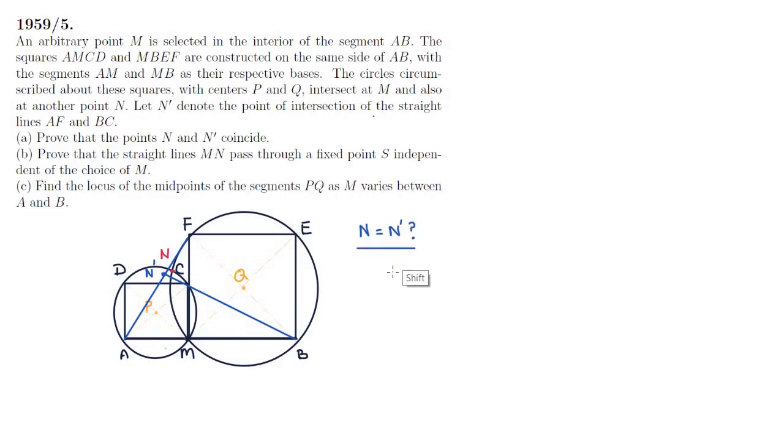Prove that points N and N' coincide. N is defined as lying on both circles, so N is defined as being on the circumference of both circles. If we can prove that N' also lies on the circumference of the circles, then we're done. So let's try to do that.